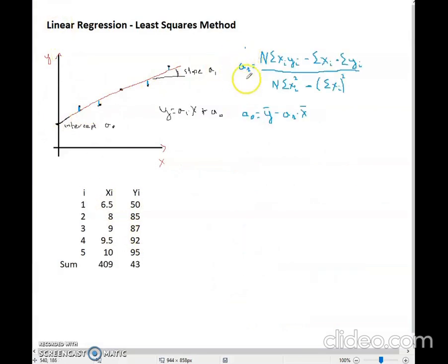So to find A1, I need the summation of xi times yi. This means that we need to add another column to our data, where we multiply each xi by yi. In this case, we have 6.5 times 50, which equals 325, and then 8 times 85 equals 680, 9 times 87 equals 783, and so on.